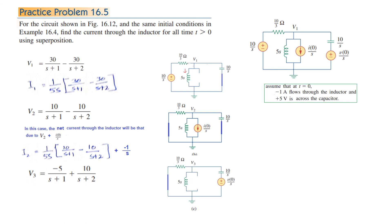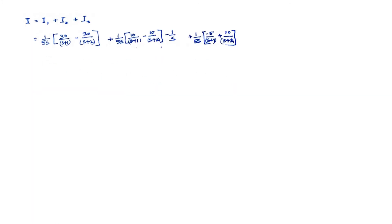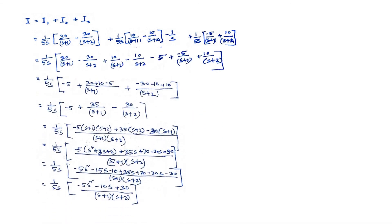For the third source, we already found v3. From it, i3 = v3/(5s). We now have all three inductor current components. The total current is the sum i = i1 + i2 + i3. Note that the −1/s term is separate and not divided by 5s. Solving step by step — I hope you can pause the video and follow each step.